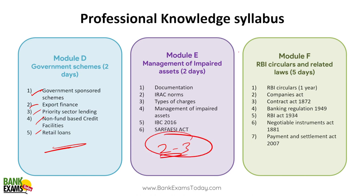A lot of questions will be asked from Module F, which is very, very important. It includes RBI circulars for the last one year — just the RBI circulars alone will take one full day. The Companies Act is not that relevant. In this whole module, RBI circulars and the Negotiable Instruments Act are the most important. You can expect 15-20 questions from RBI circulars and 6-7 from the Negotiable Instruments Act. Maybe 2-3 questions from RBI Act 1934, 3-4 from Banking Regulation Act, 1-2 from Contract Act, and 2-3 from Companies Act. Focus must be on RBI circulars and Negotiable Instruments Act.